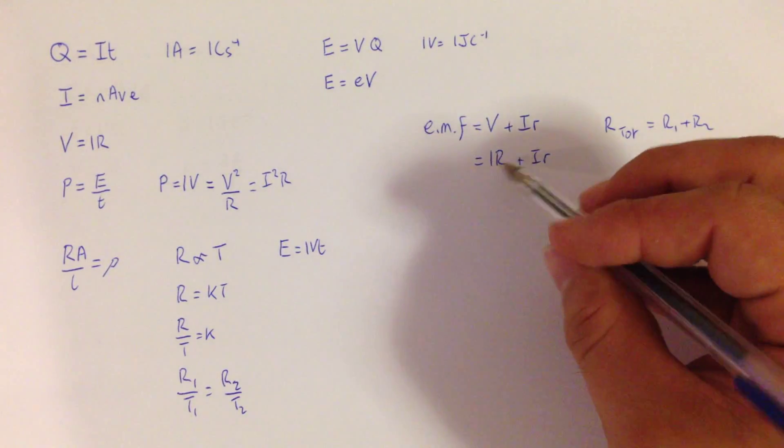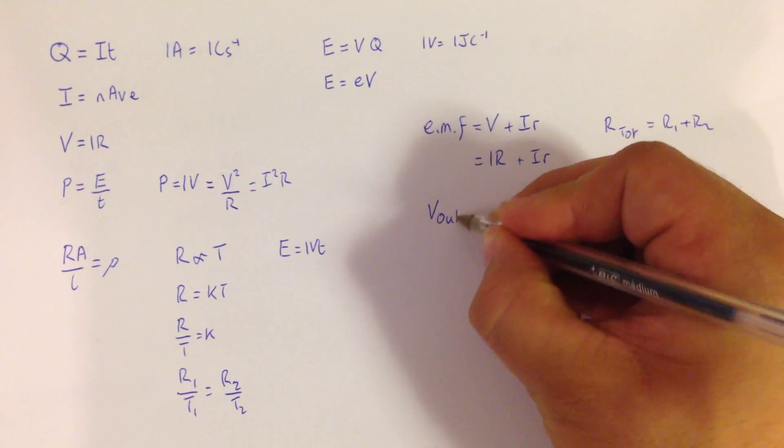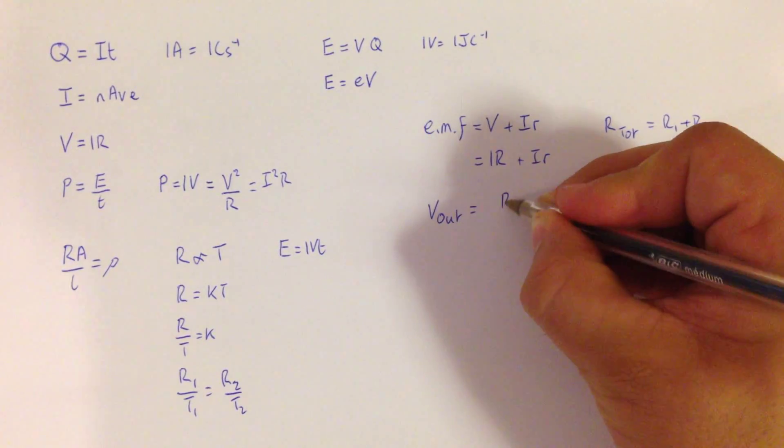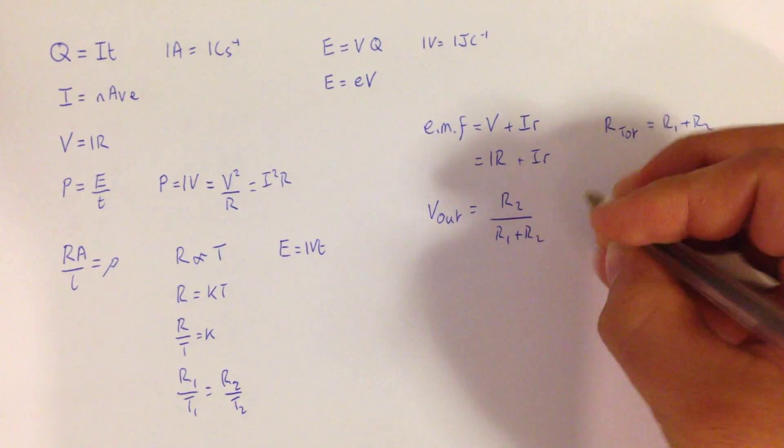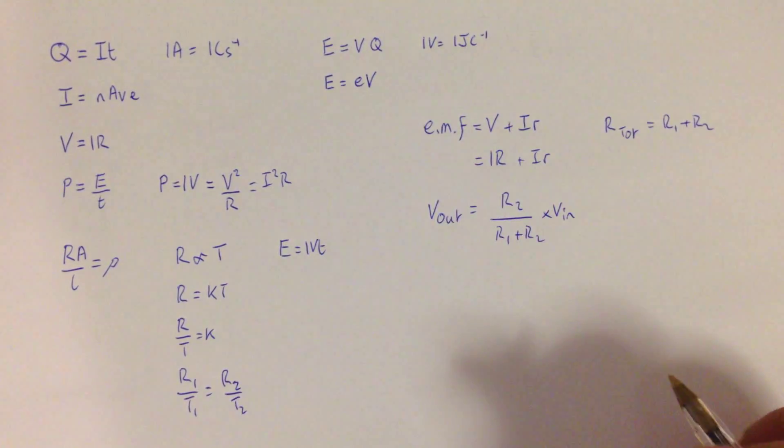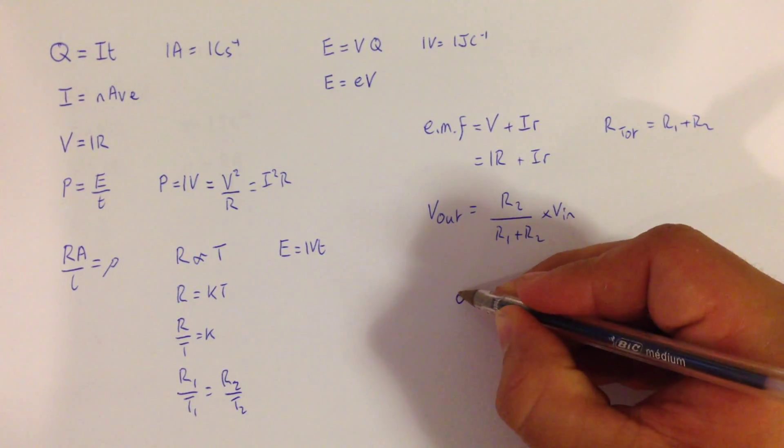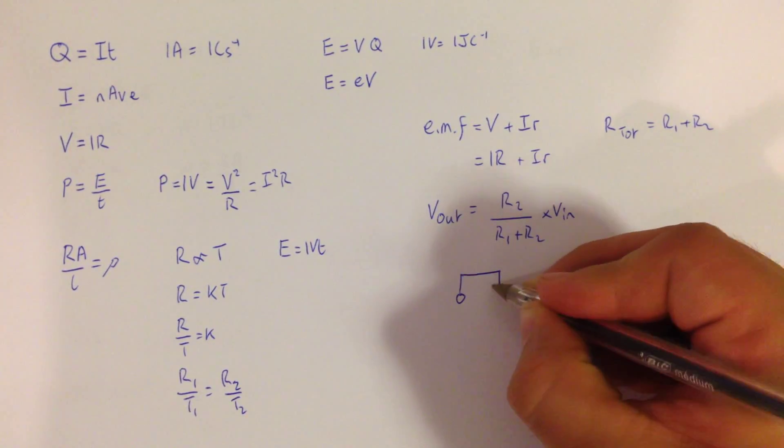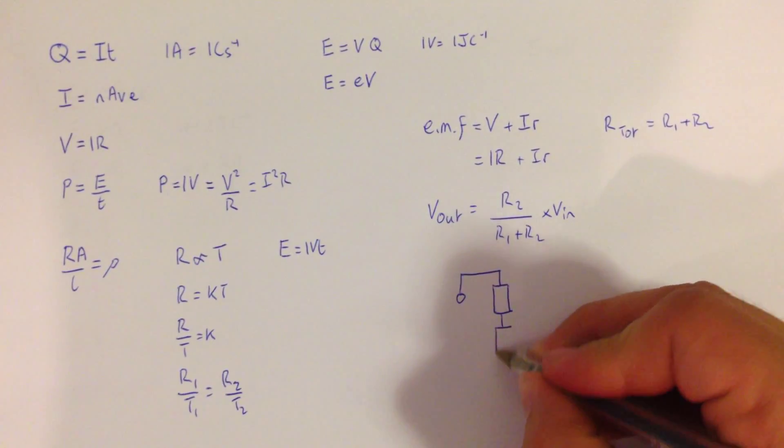The next one is the potential divider equation, which is that the voltage out is equal to R2 over R1 plus R2 multiplied by the voltage in. In order to understand this expression, you need to be able to relate it to the diagram, which is that in a potential divider, we're going to split the voltage over a component.